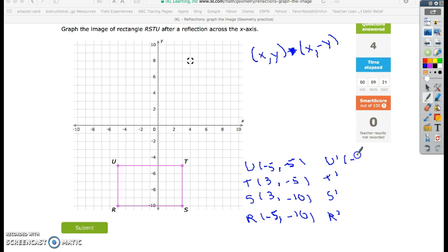And all I'm going to do is change the y. So I have negative 5 stays the same as my x. Then the negative 5y changes to a positive 5.